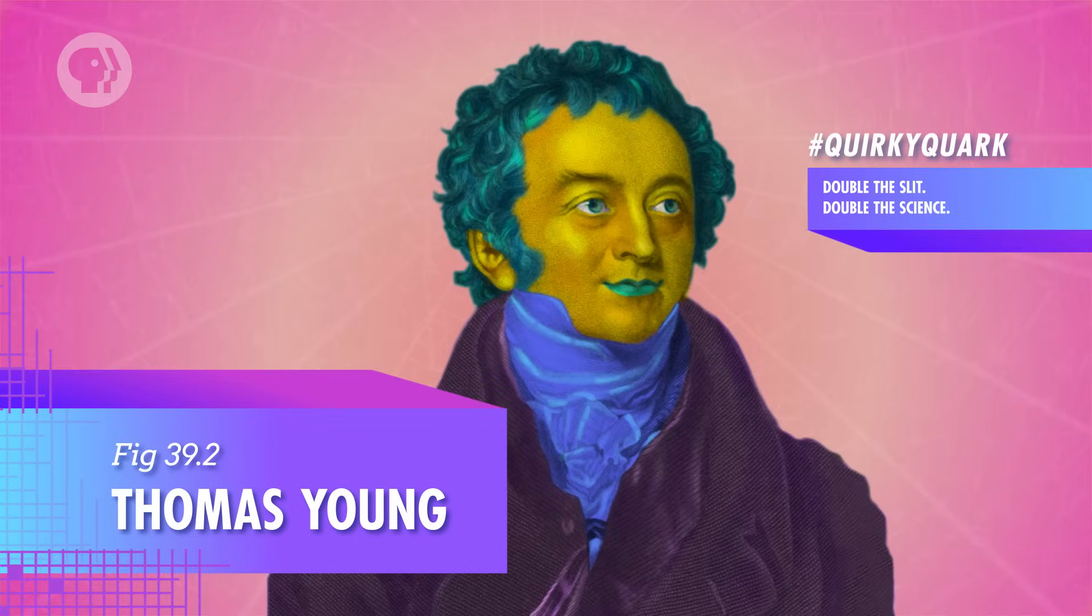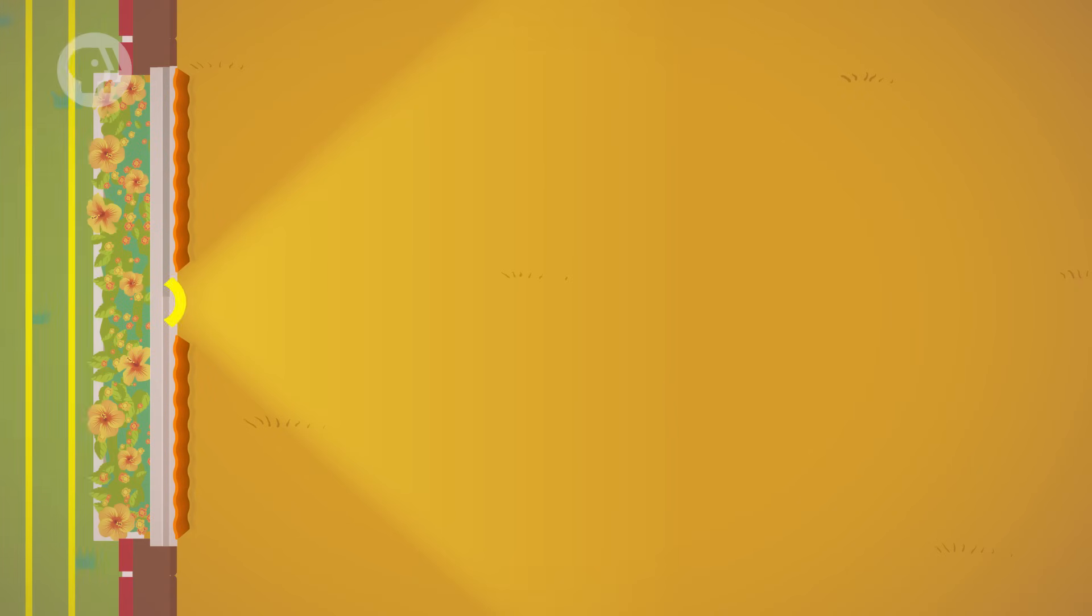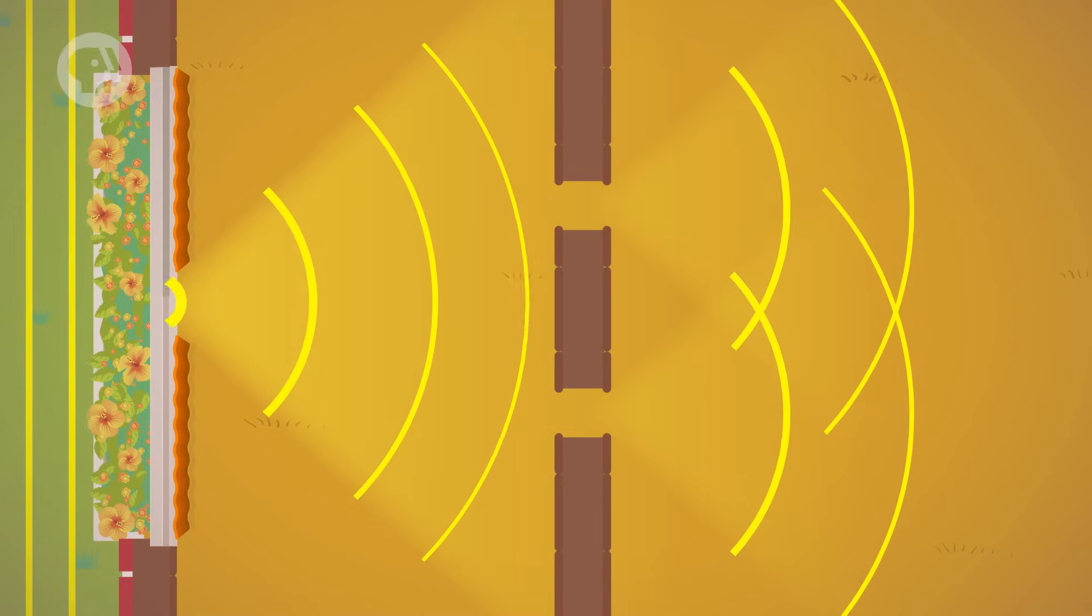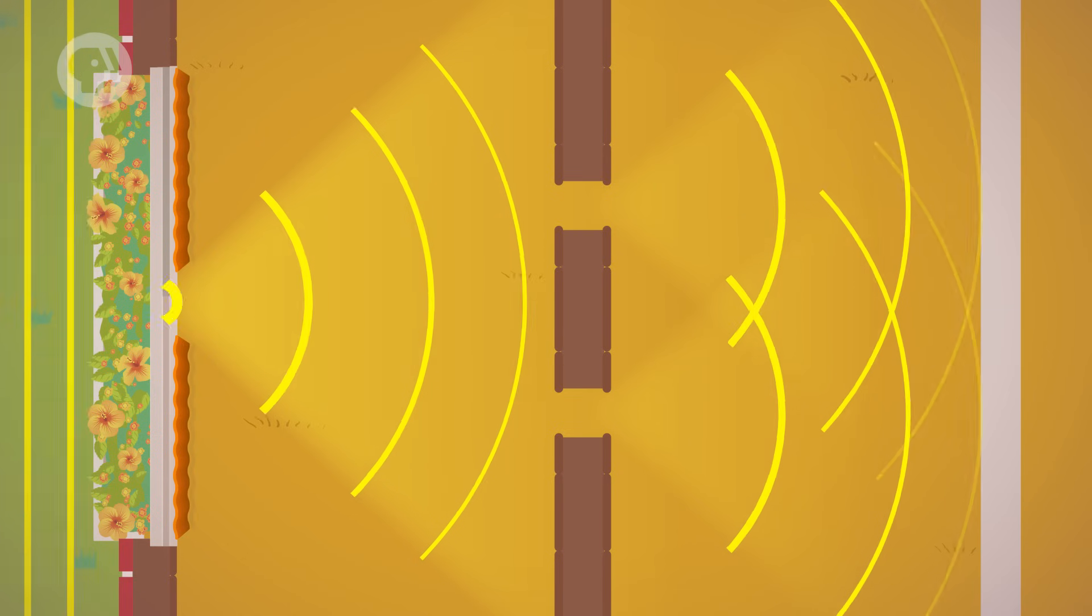Together, diffraction and interference help explain the results of the famous double-slit experiment conducted by English physicist Thomas Young in 1801. Young covered a window so that only a very narrow stream of sunlight passed through a slit into the room. Then he positioned a plate with two more tiny slits cut into it, spaced very close together, so that the single beam of sunlight passed through them. Finally, he placed a screen behind the slits.